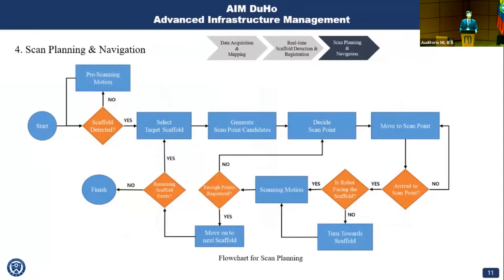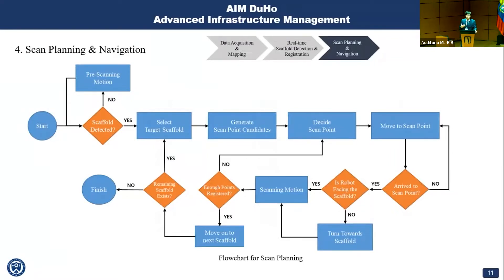Now I'll talk about scan planning and navigation. This is the flowchart for scan planning. If scaffolds are not detected, the robot assumes there are not enough data points — because if there were really no scaffolds we wouldn't use this program — so we perform a pre-scanning motion to gather more point clouds. After a scaffold is detected, the target scaffold is selected based on distance, a scanning point is decided, the robot moves to the scan point, turns to face the scaffold, and performs a scanning motion. If enough points are registered, the robot moves on to the next scaffold and repeats the process until every scaffold is finished.